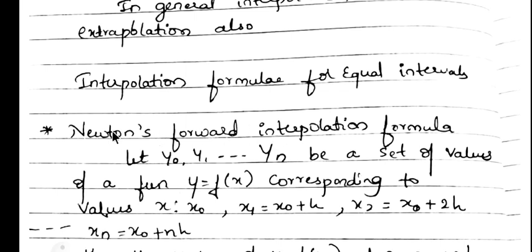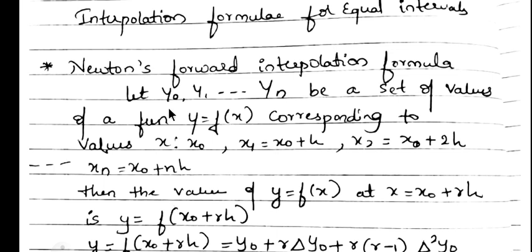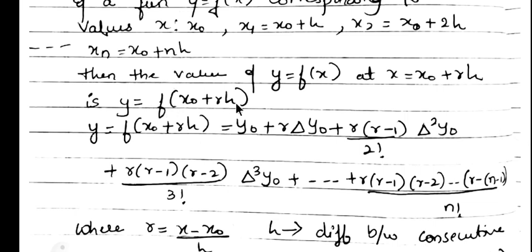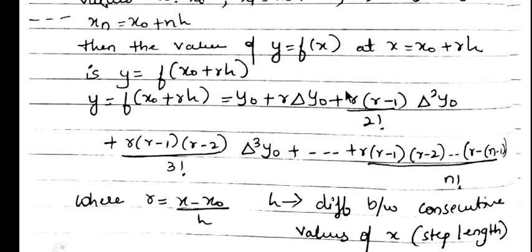Now we look into Newton's forward interpolation formula. Here the interval is equal — h will be the same throughout. Let y₀, y₁, ..., yₙ be values of a function y = f(x) corresponding to x₀, x₁ = x₀ + h, x₂ = x₀ + 2h, ..., xₙ = x₀ + nh. Then the value of y = f(x) at x = x₀ + rh is y = f(x₀ + rh).